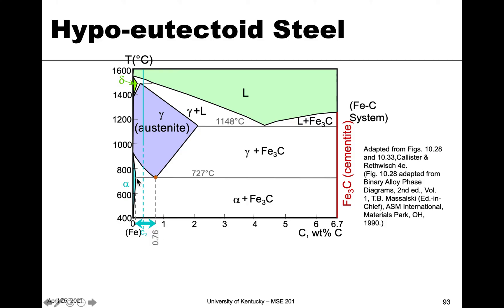So anything below that and above this point right here, which is approximately 0.22. And so this composition that we have highlighted is a hypo eutectoid steel. And so we want to look at what happens to the compositions of those and how the microstructure looks.